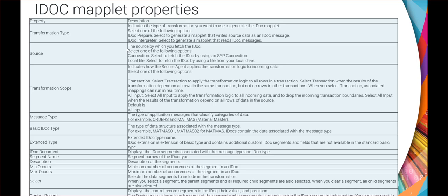Next is the message type, which is the type of application message that classifies categories of data — usually formats like MATMAS or ORDERS from SAP. Within the message type there is a data structure you can define in the basic IDOC type, and in the extended type you can specify any custom extension or custom configuration. The IDOC document displays the IDOC segments associated with the message type, IDOC type, and extended type. It also shows the segment names, descriptions, and minimum and maximum occurrences. You can select only the segments you need rather than all default segments, and you also have the option to configure fields in the control record code if needed.